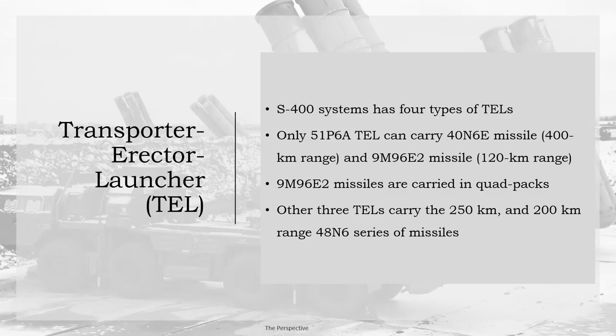The S-400 system has four types of TEL. Only the 51P68 TEL can carry the 40N6E missile with 400 kilometer range and the 9M96E2 missile with 120 kilometer range. The 9M96E2 missiles are carried in quad packs. The other three TELs carry the 250 kilometer and 200 kilometer range missiles from the 48N6 series.